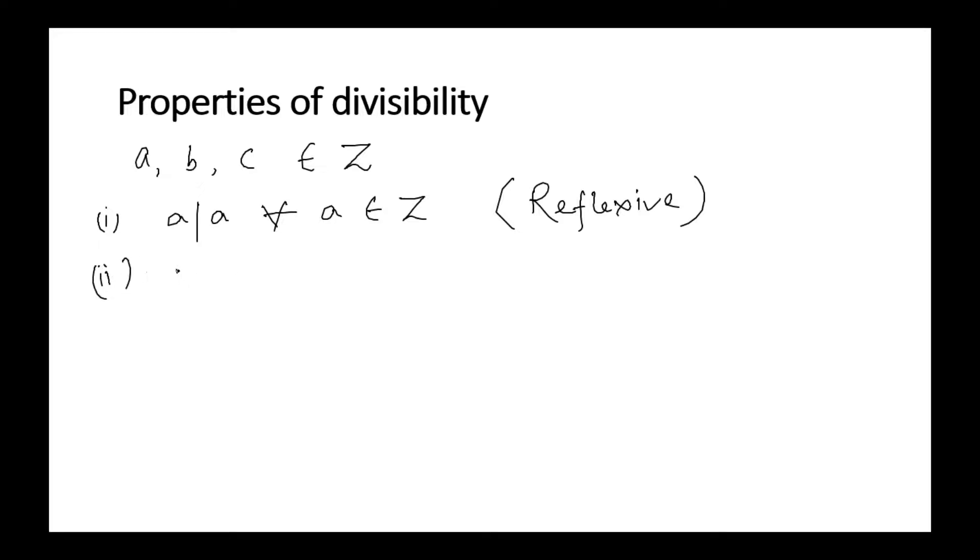Property 2: If a divides b, then a divides bn for any integer n.